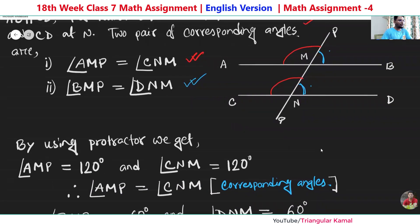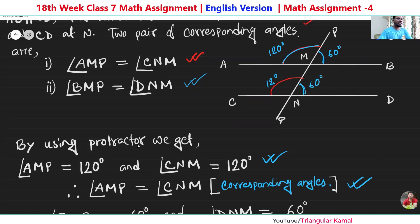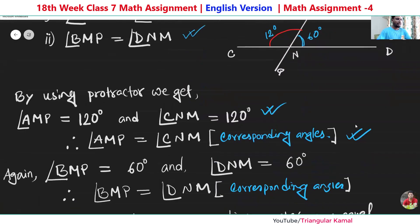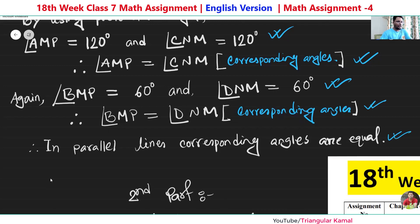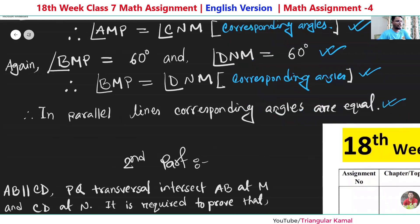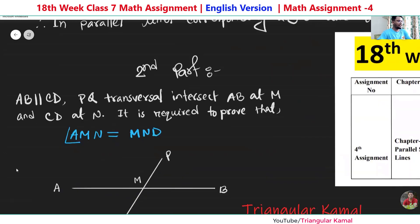By using the protractor we see this angle is 120 degrees and this corresponding angle is also 120 degrees. Again, using the protractor, this angle is 60 degrees and this angle is also 60 degrees — so the second set is also equal. Both sets are confirmed: the first set is 120 and 120, the second set is 60 and 60. In conclusion, in parallel lines corresponding angles are equal.